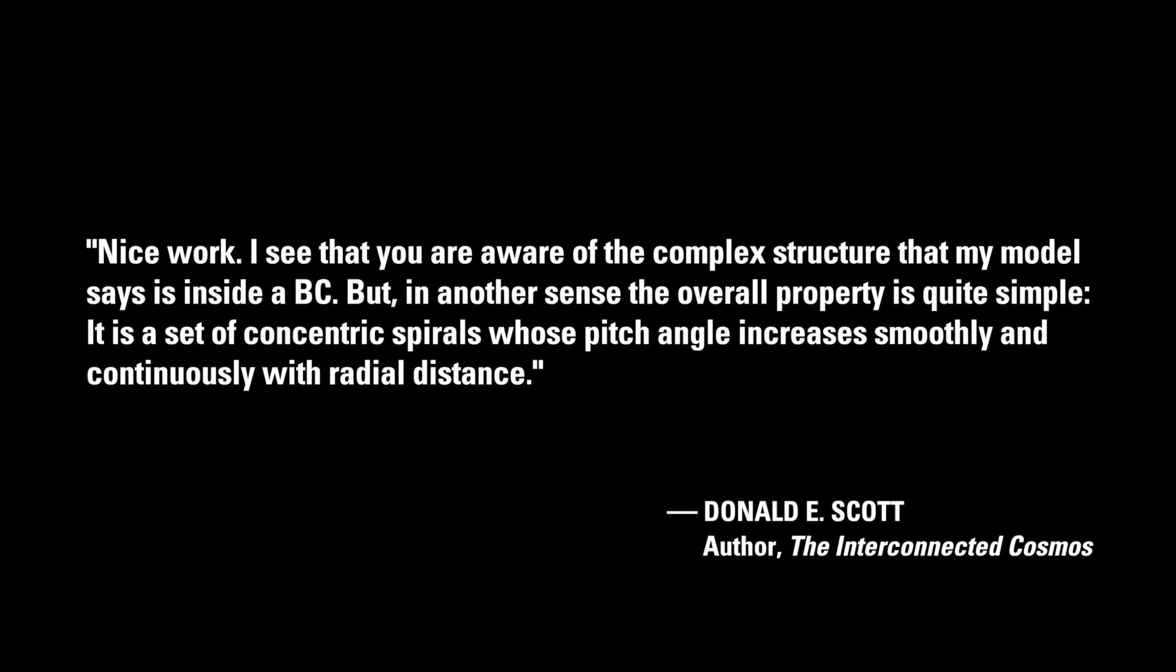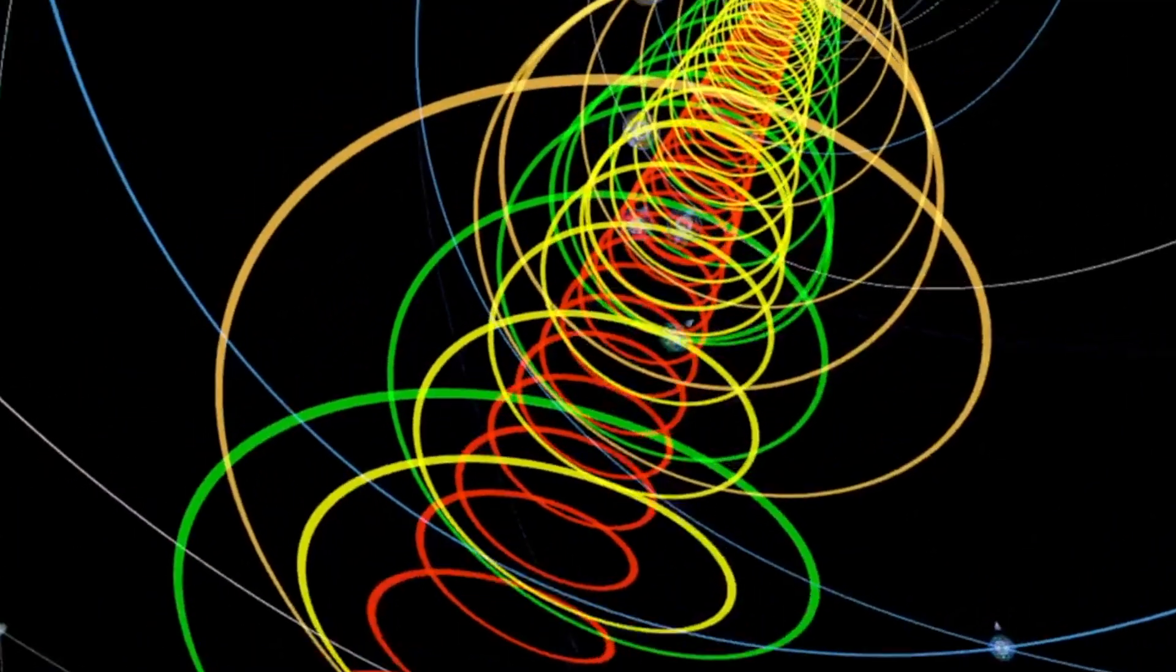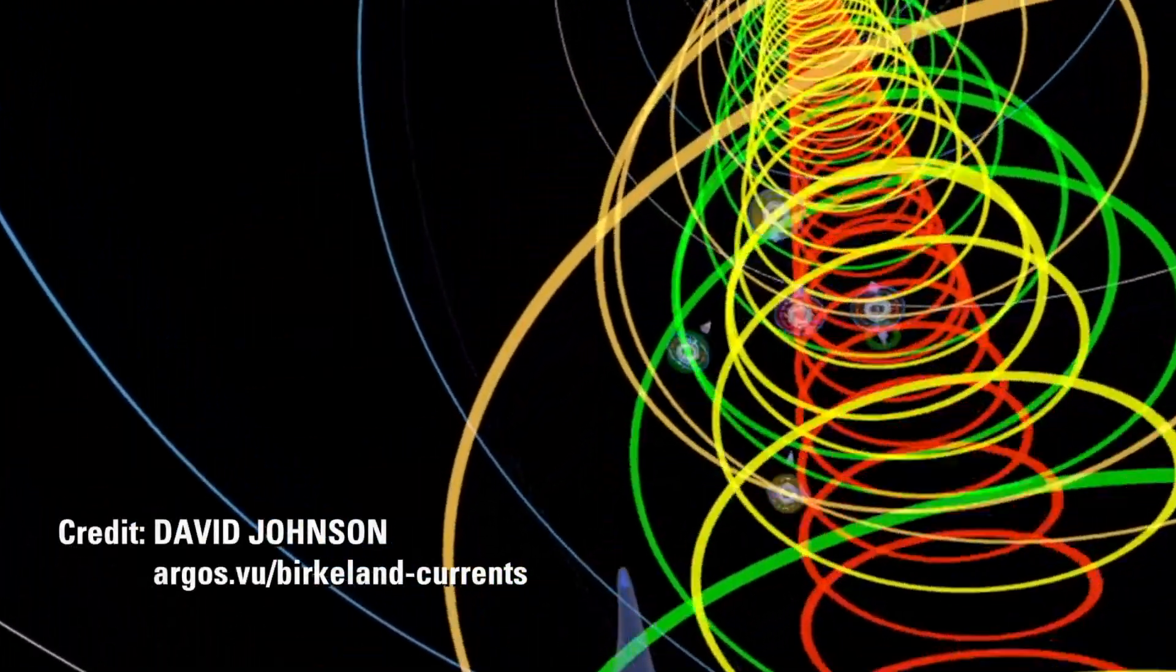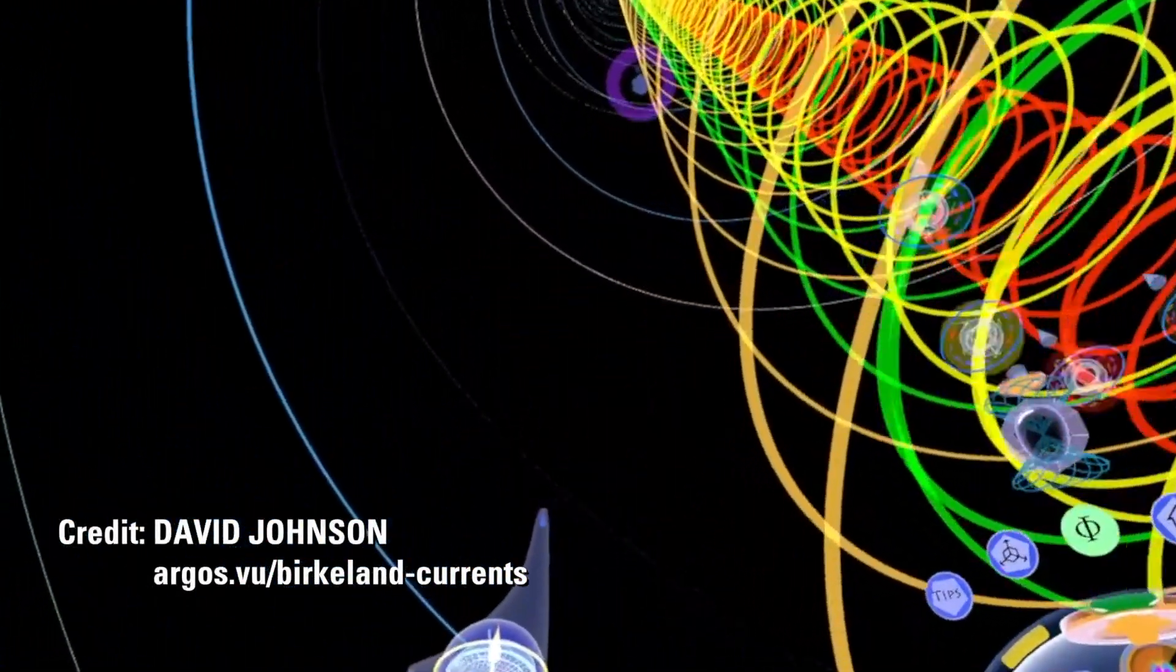I see that you are aware of the complex structure that my model says is inside a Birkeland current, but in another sense the overall property is quite simple. It is a set of concentric spirals whose pitch angle increases smoothly and continuously with radial distance.